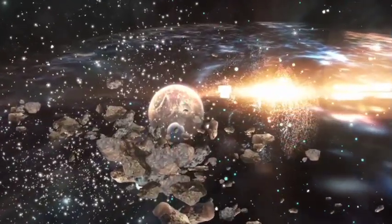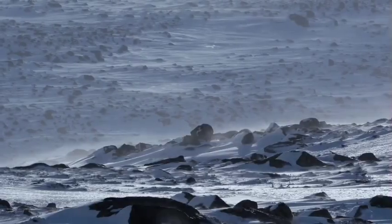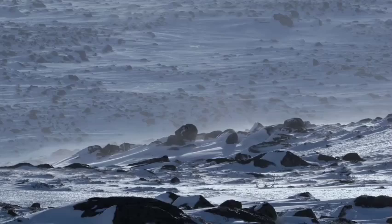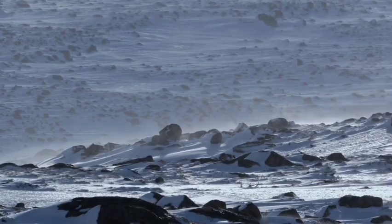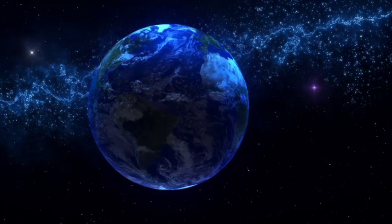Proxima b may not have a stable atmosphere, which is essential for regulating temperature and supporting liquid water. Without it, life as we know would struggle to survive.